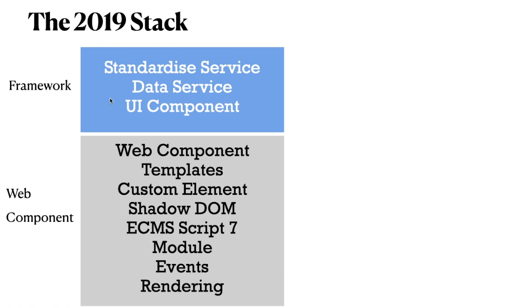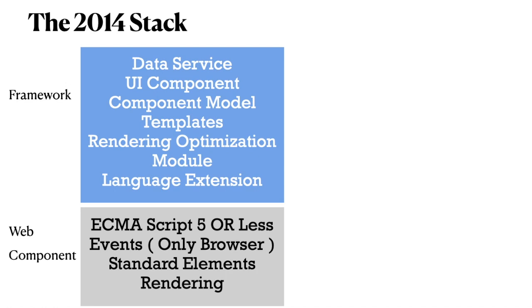In the 2019 stack, we have data services - these are services used to get data from Salesforce and display it to UI components, or to send data to third-party systems. We also have UI components, but in the 2019 web stack we only use Lightning Base Components - we are not using UI components or Force components like in the 2014 stack.